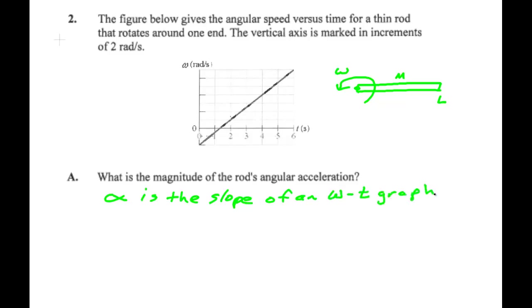So what they're asking me is what's the slope of this straight line? Now I look up here and it says the vertical axis are marked in increments of 2 rad/s. So that's 2, that's 4, that's 6.